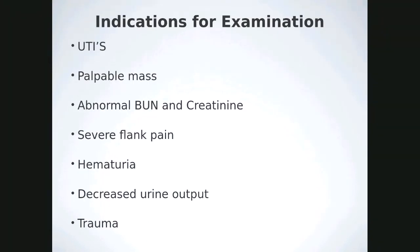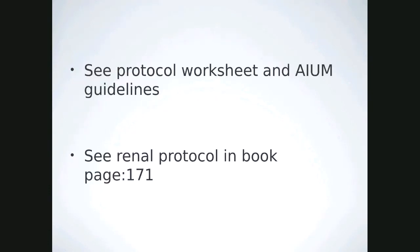Indications for renal evaluation include frequent UTIs, a palpable mass, abnormal labs (BUN and creatinine), severe flank pain, hematuria, decreased urine output, or trauma in the kidney region. Check the protocol worksheet in the AIUM guidelines. This concludes part one; part two will cover the spleen through the breast.